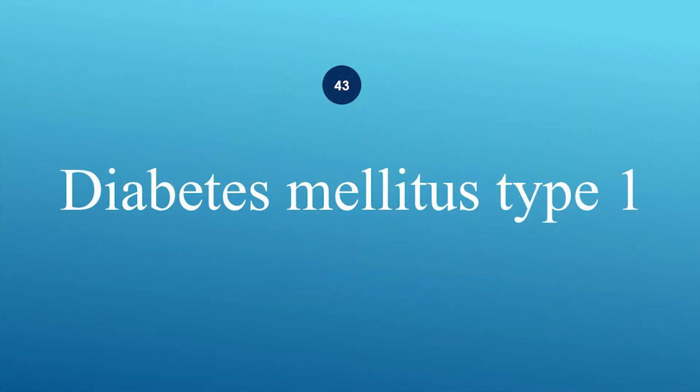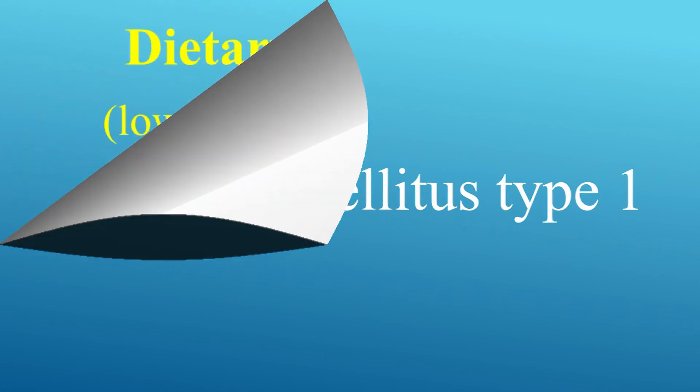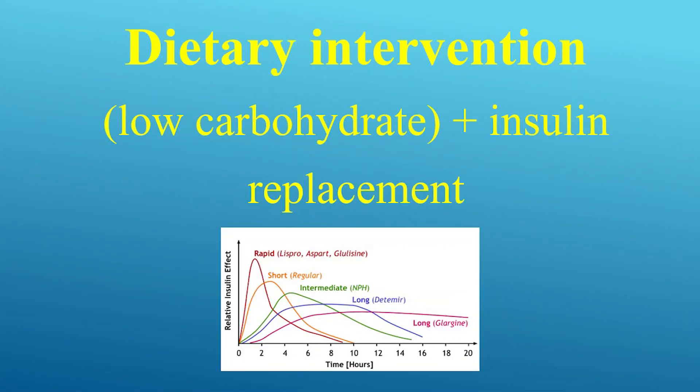How is type 1 diabetes mellitus managed? Use dietary intervention with low carbohydrate and insulin replacement. You must know the insulin duration chart by heart.